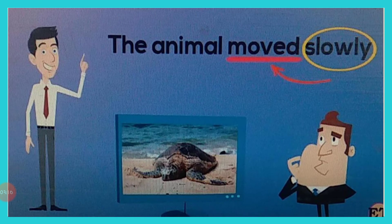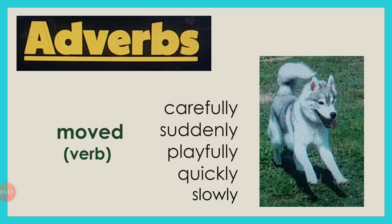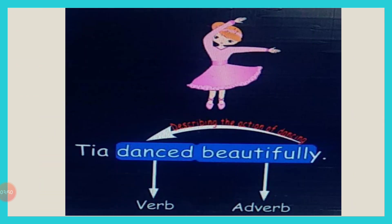Read this sentence with me. Slowly is an adverb because it is describing the verb moved. Adverbs describe verbs. Now let's see what other adverbs we can use to describe how an animal moves. The animals can move carefully, suddenly, playfully, quickly or slowly. Now let's learn about adverbs with some other examples. Tia danced beautifully. Here, danced is a verb telling us what Tia is doing, and the word beautifully is describing how Tia danced. So the word beautifully is an adverb — it describes or gives us information about the verb dance.